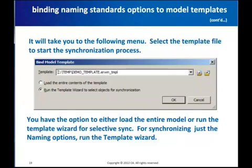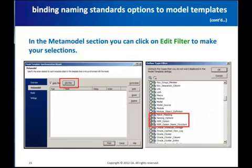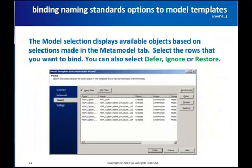Once the template model is loaded, you get these selections. Bind Model Template allows you to either bind the entire contents of the model, which is a choice if you want to bind more than just naming standards options. However, if the purpose is just to synchronize the naming standards options, run the Template Wizard. In the Model Template Synchronization Wizard you can make your selection about what you would like to bind. The selections include the meta model, model, and settings. In the meta model, you can select the class of objects that you would like to bind. Click on Edit Filter to get the editor to make the selections. For this presentation we have selected just the options related to naming standards, so it will import just the naming standards objects and options. The Model tab displays the available objects based on the selections made in the Meta Model tab.